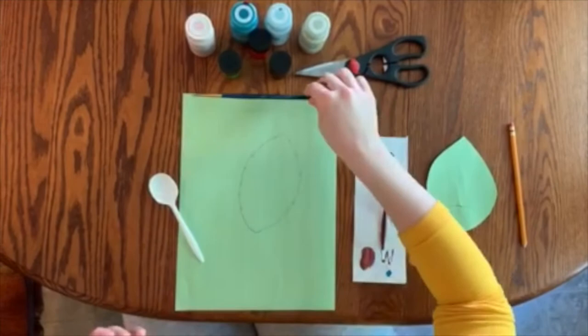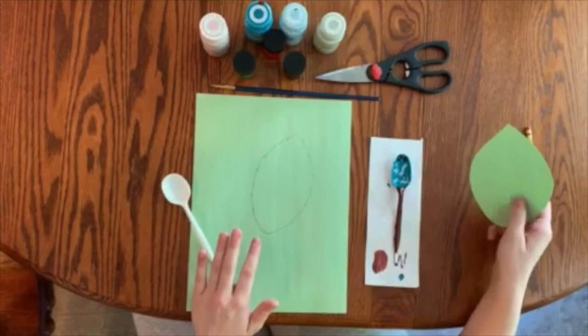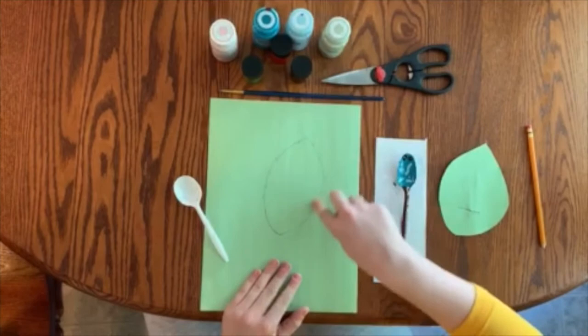Also a paintbrush, whatever size, this is all up to you, and then scissors. So for the sake of time I already cut out my leaf, but you're going to trace your leaf on paper and cut it out.